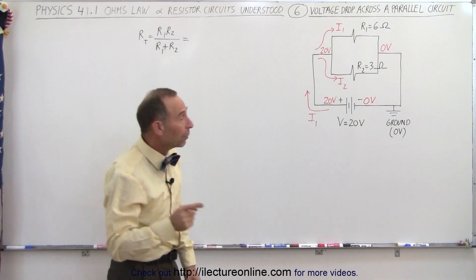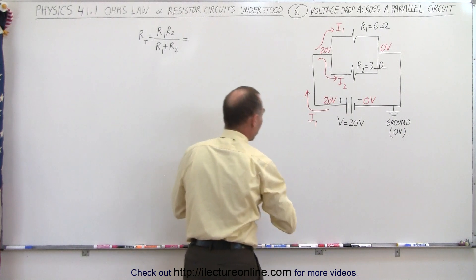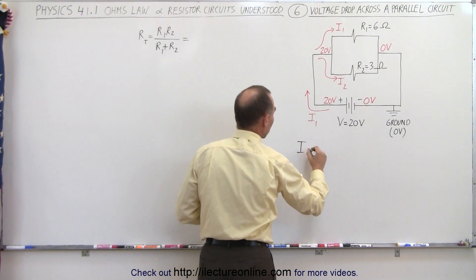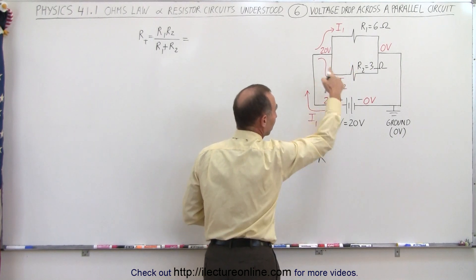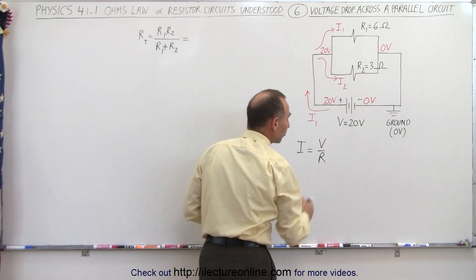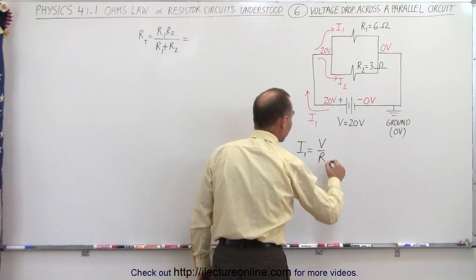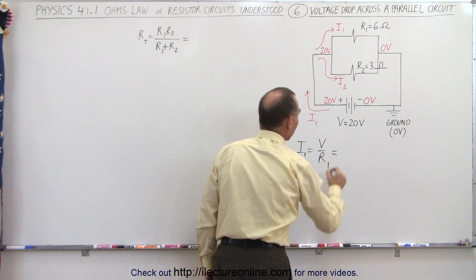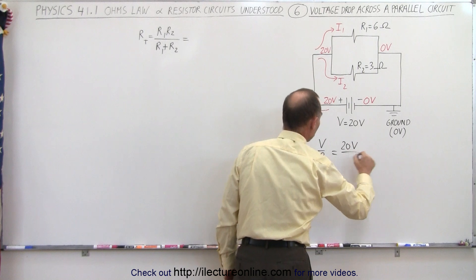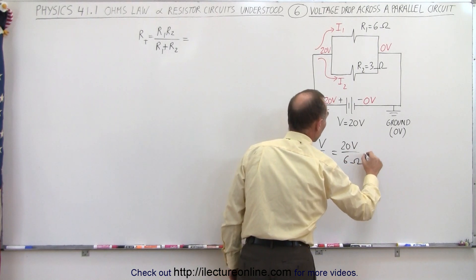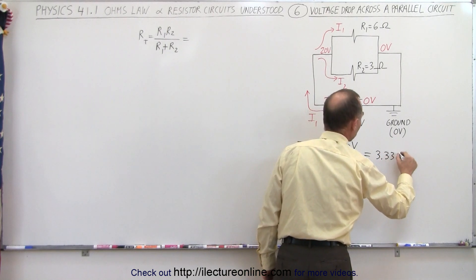That allows us to figure out what the current is through each of the two branches. Because using Ohm's law, we know that I is equal to V divided by R. And so since we know the voltage drop across each resistor, and we know each resistor, we can find the current in each branch. So in this case, I1 must be V divided by R1 right here. And so the voltage drop across R1 is 20 volts, and the resistance is 6 ohms. So 20 divided by 6 is 3.33 amps.